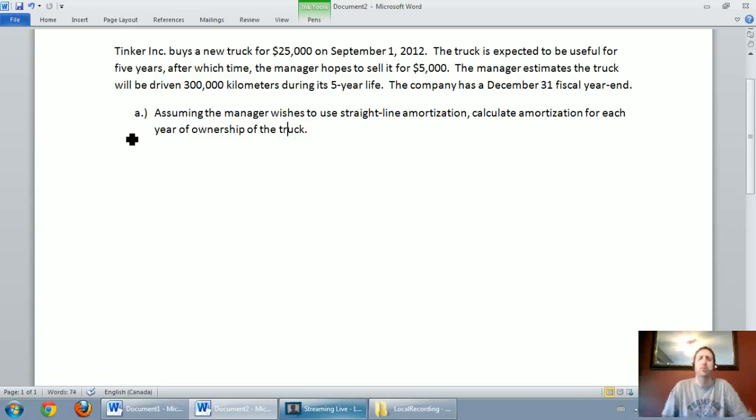So a couple of quick concepts. We buy the truck for $25,000 and I think, okay, well we're buying it for $25,000 and it's going to be amortized for five years, so $25,000 divided by five. It's not a bad thought, except for this one key part: after the five years the manager thinks he's going to be able to sell the truck for $5,000.